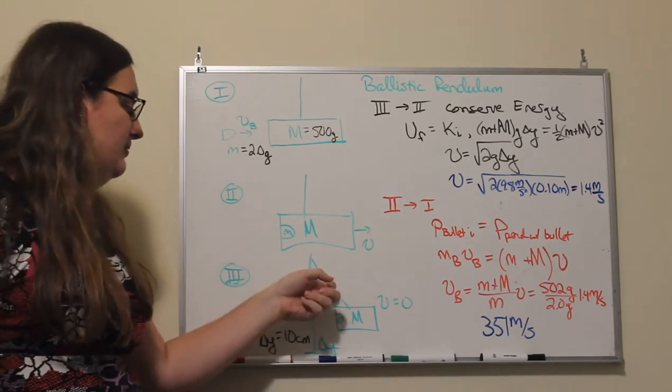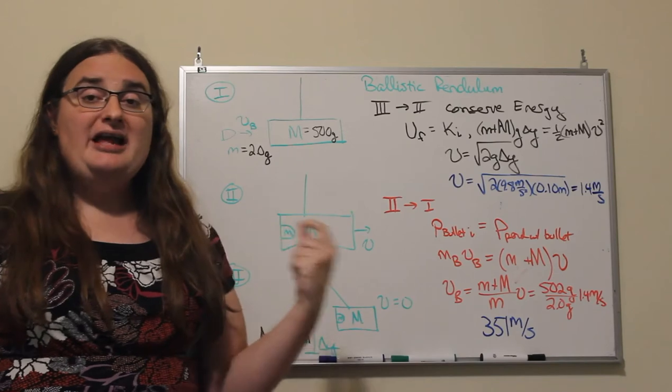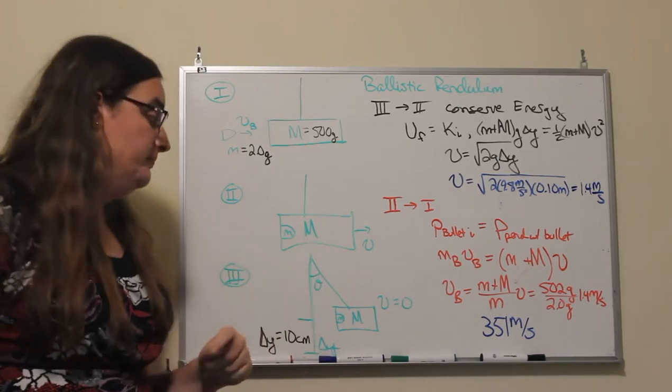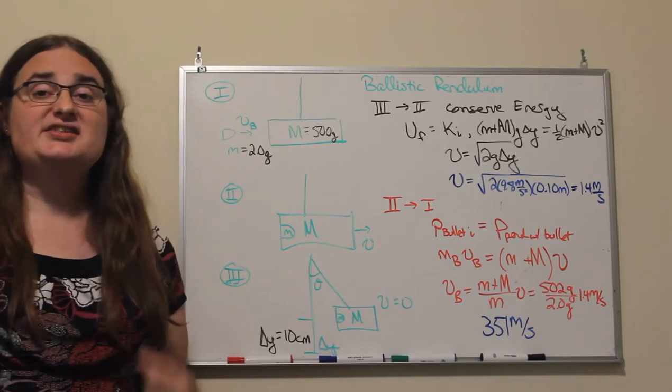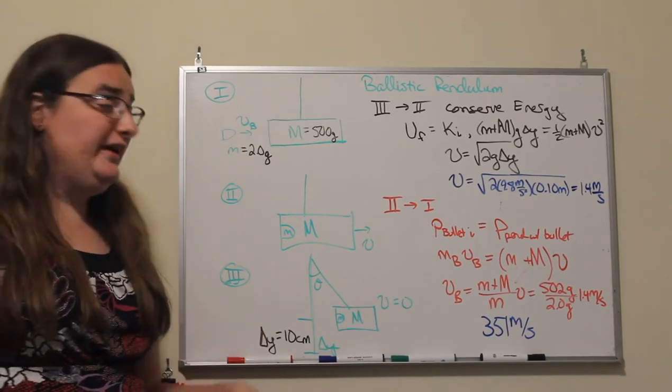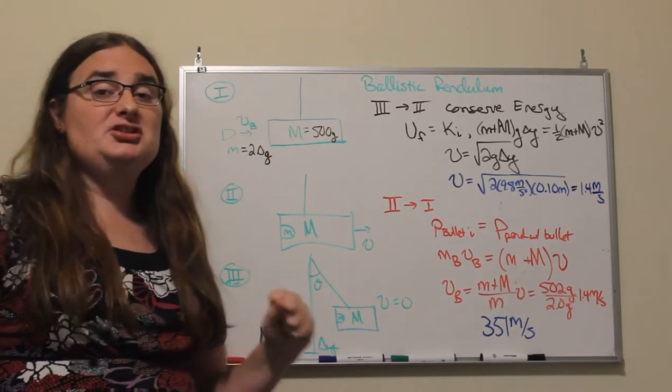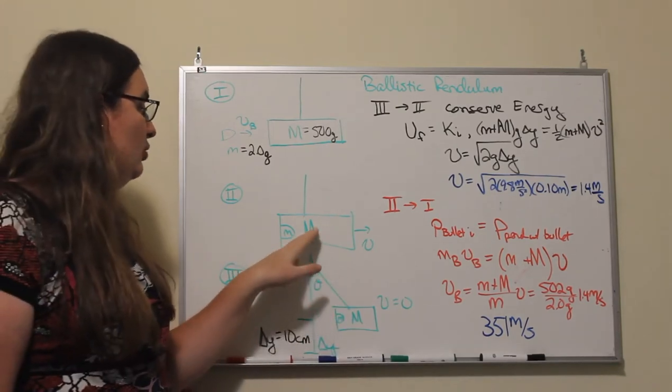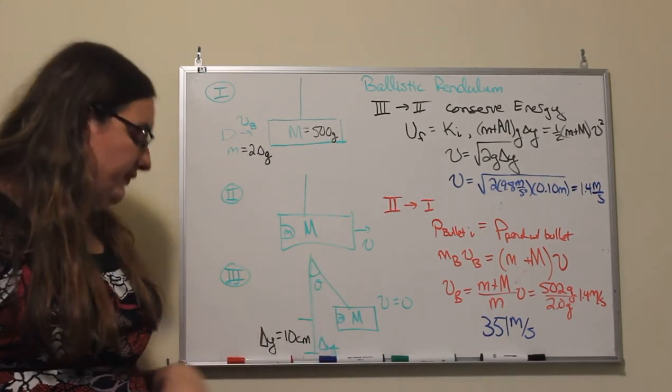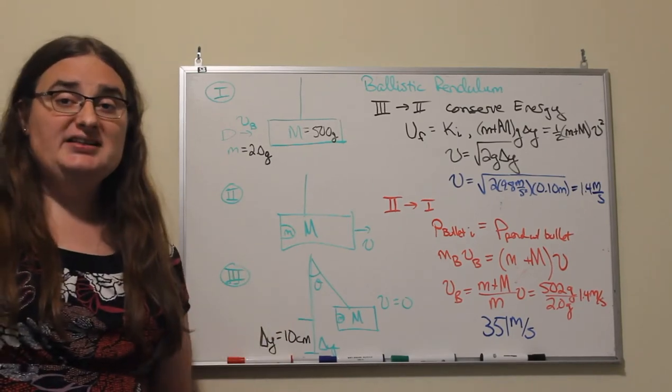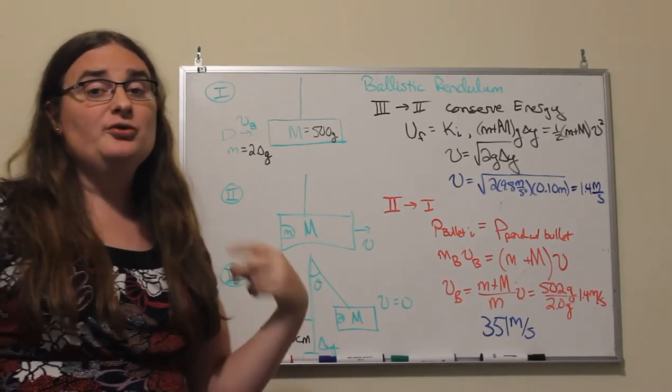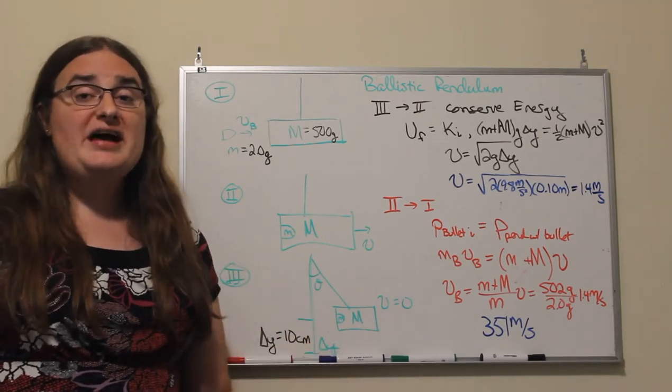So if we can measure either the angle of deflection of our pendulum or the height that that pendulum rises, we have a way of figuring out how fast the pendulum is moving at the bottom, and then by recording the mass of our pendulum initially and the mass of the projectile, we could solve for the velocity of that projectile.